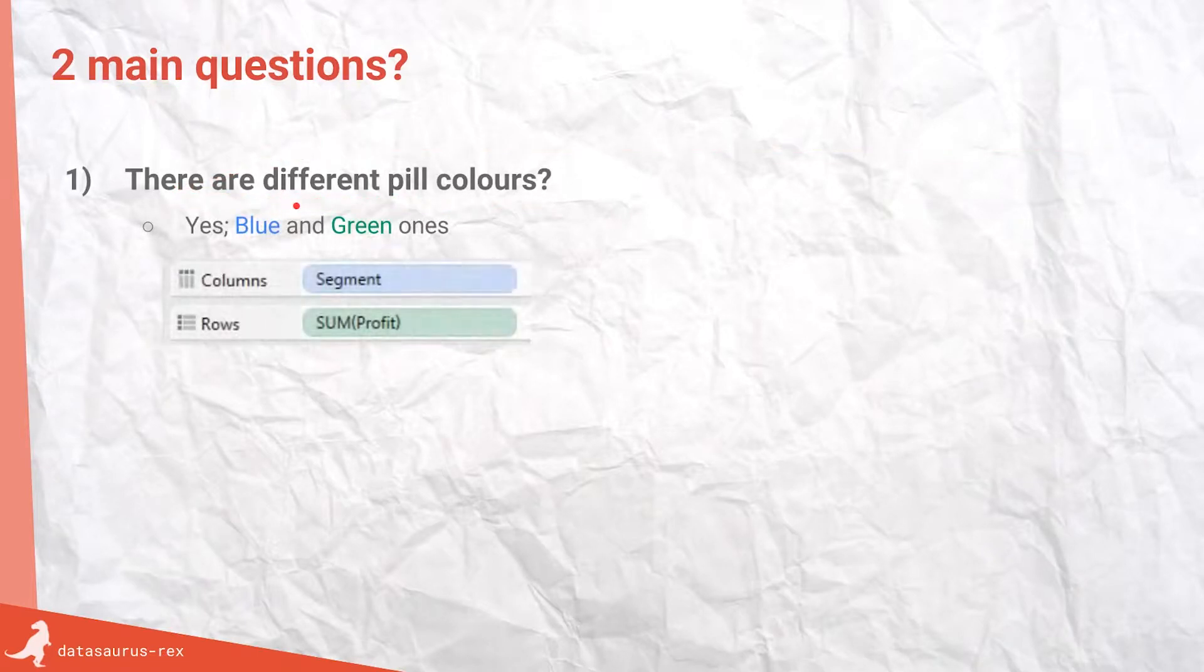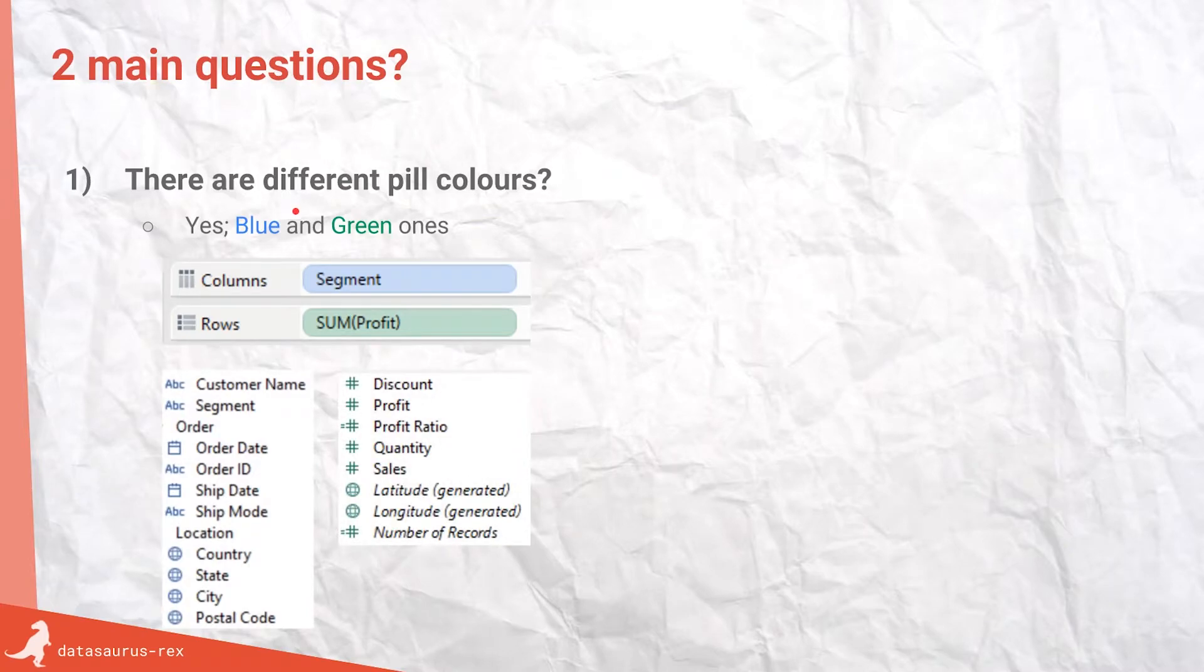So the first two questions I get about these pill colors. First one is, are there different colors? A lot of people use Tableau don't even realize. But there are, and you can see the blue and the green ones when you put them in the columns or row areas, or even within the data sets for the dimensions and measures area. You can see them here.